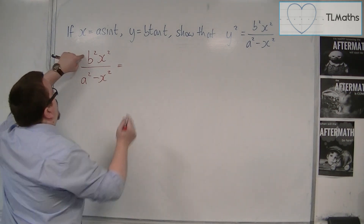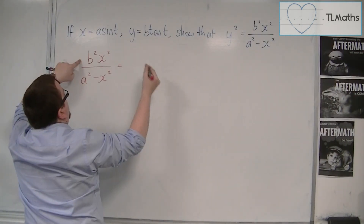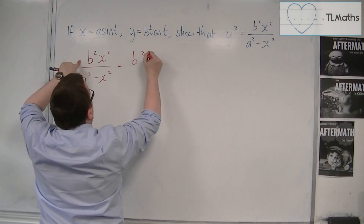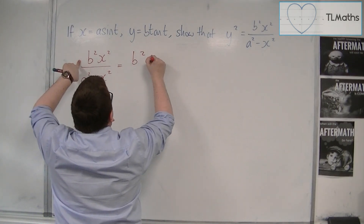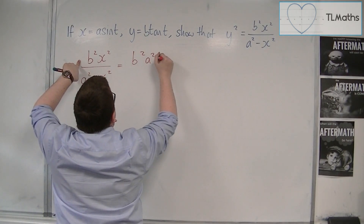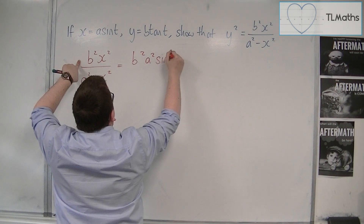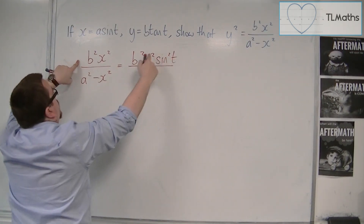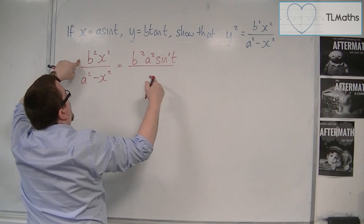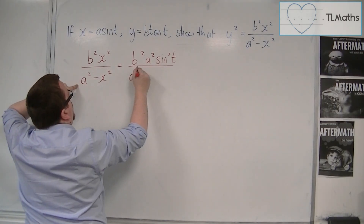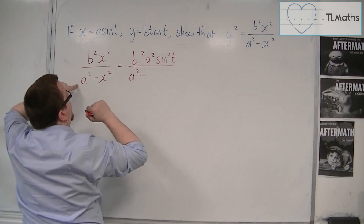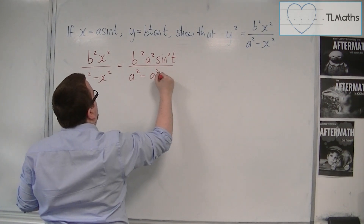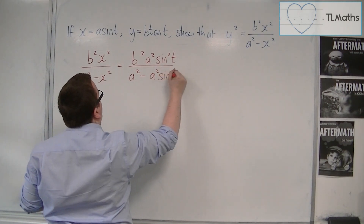Now, x is equal to a sine t, so we've got b squared times a squared times sine squared t — that's x squared. Then we've got a squared minus x squared, which gives a squared minus a squared sine squared t.